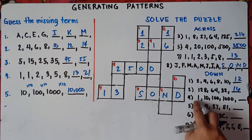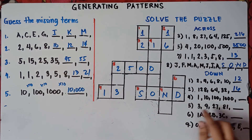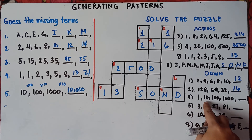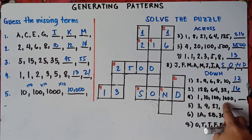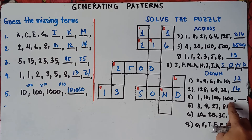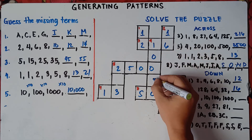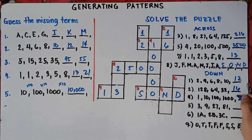For number 4 down: 1, 10, 100, 1,000 — same as number 5 across. You multiply by 10. So 1,000 times 10 is 10,000. The answer for number 4 down is 10,000.